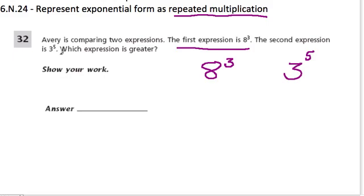They want to know which expression is greater. Often students will rush and say 8 to the 3rd is 24, because 8 times 3 is 24 — but that's not what this is saying.